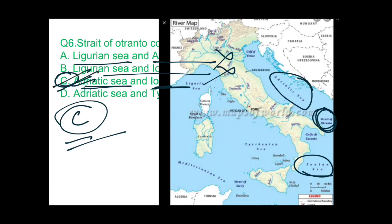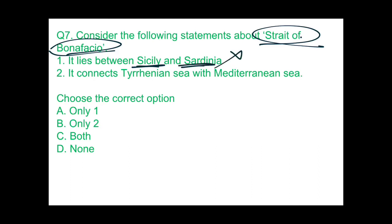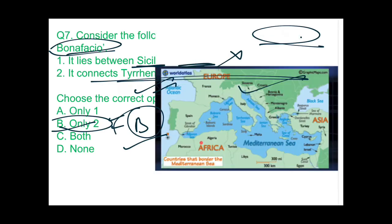Question 7: consider the following statements about the Strait of Bonifacio. Statement 1 — it lies between Sicily and Sardinia: wrong, it lies between Sardinia and Corsica. Statement 2 — it connects the Tyrrhenian Sea with the Mediterranean Sea: correct. So option B (only Statement 2) is the answer. On the map you can see the Strait of Bonifacio connecting Corsica and Sardinia, linking the Tyrrhenian Sea with the Mediterranean Sea.